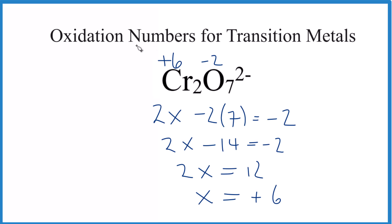That's how you find oxidation numbers for transition metals. If you need help, there are links in the description at the end of this video. This is Dr. B — thanks for watching.